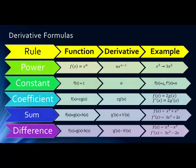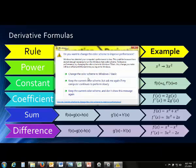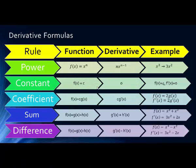There are a number of different derivative formulas or shortcuts. The first rule we're going to learn is called the power rule. This is when the function equals x raised to a power — the variable raised to a power. The derivative is equal to the power: you pull the power down in front as a multiplier times the variable, and then the exponent is one less.